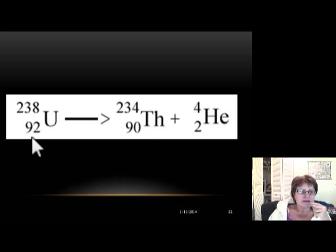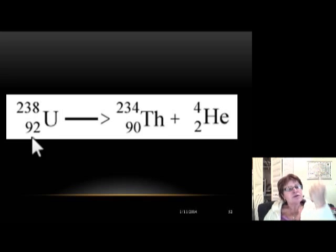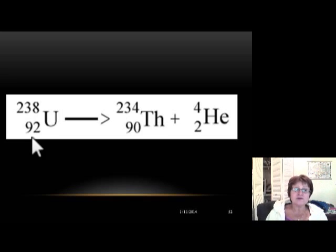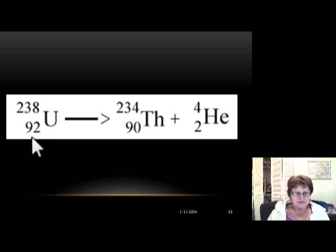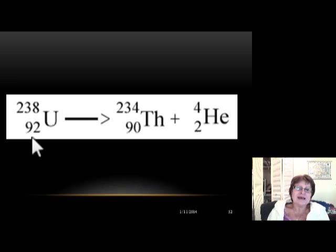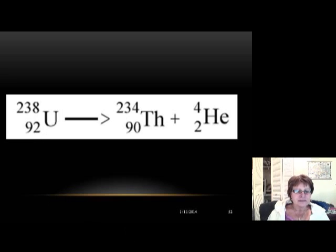To check if you did it right, just do the addition: 234 plus 4 equals 238 — mass number is correct. And 90 plus 2 gives you 92 — so it's a perfectly balanced nuclear equation. You can go home and tell everyone you can do nuclear equations just fine!